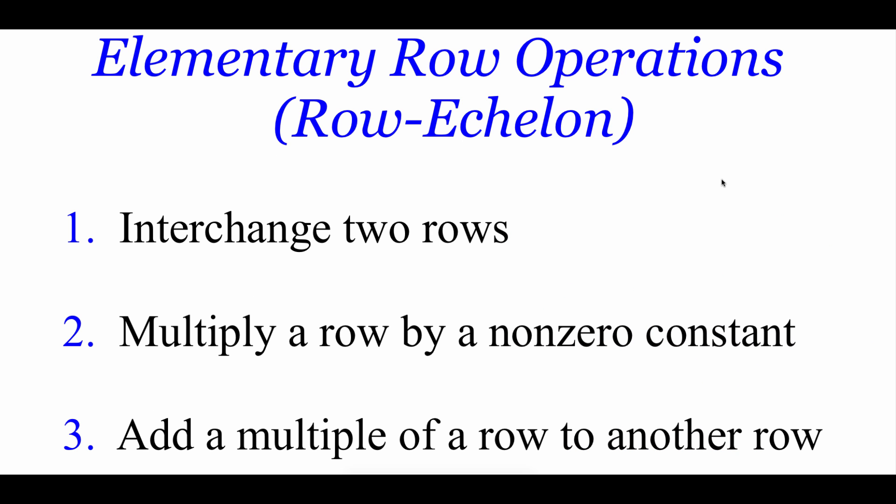Our whole goal with these matrices is to take those systems of equations, rewrite them as a matrix, and solve it. We're going to use things called elementary row operations to get our matrices in row echelon form. Those elementary row operations are: we can interchange two rows, we can multiply a row by a non-zero constant, and we can add a multiple of a row to another row to help us get the row echelon look to our matrix.